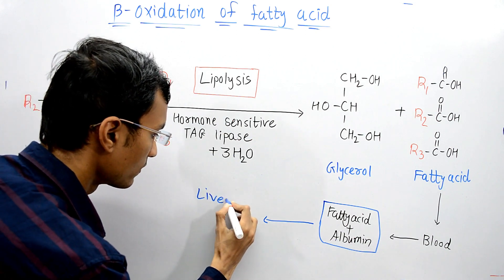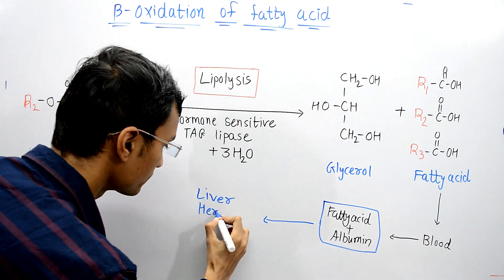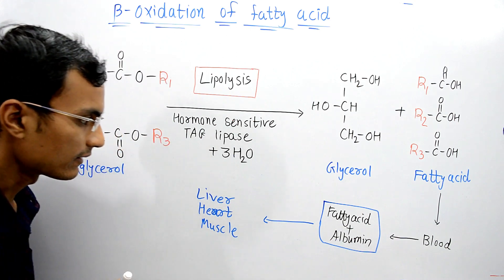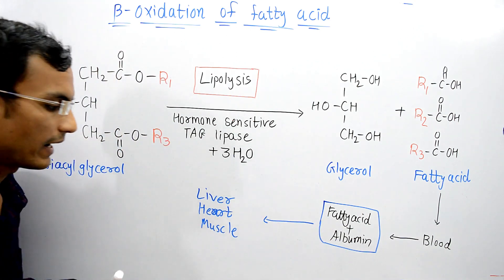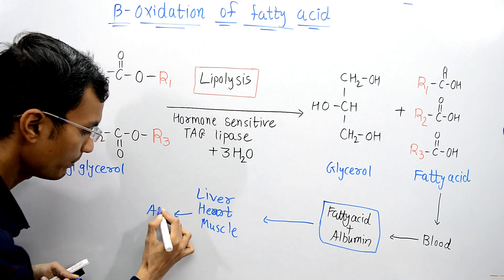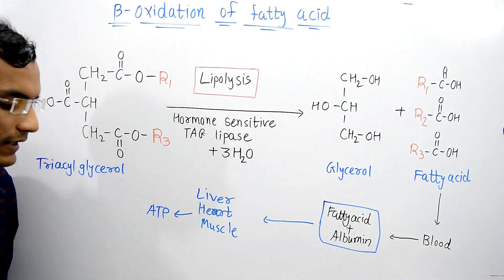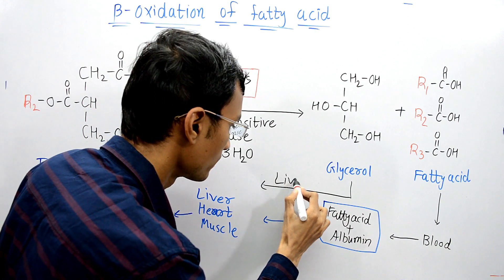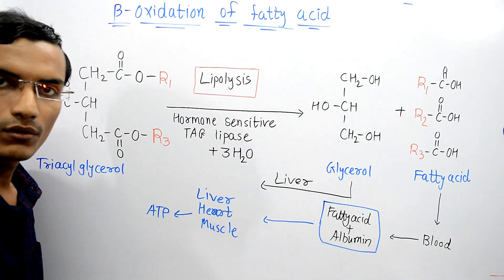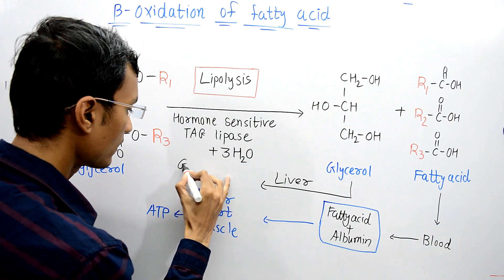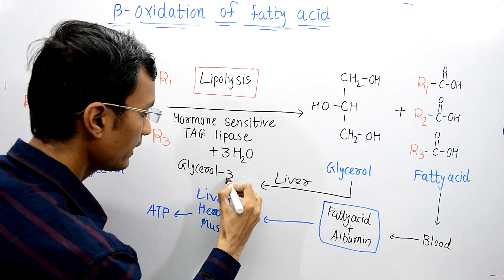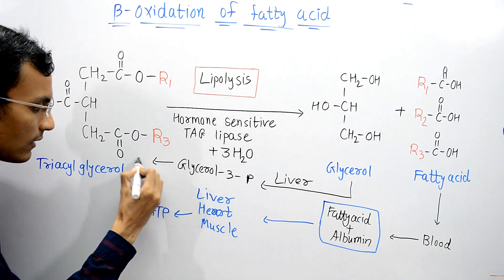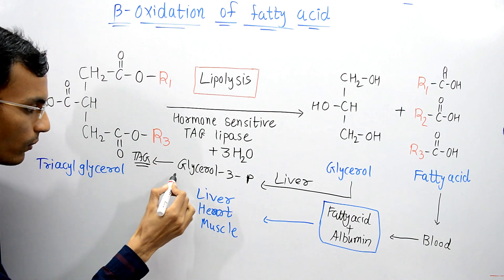For example, liver, heart, and cardiac tissue, and muscle — where the fatty acid gets oxidized and energy molecules are produced. The glycerol produced here is transported to the liver, where it is converted to glycerol-3-phosphate.